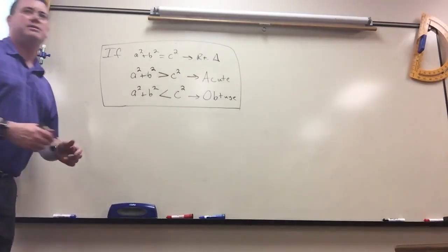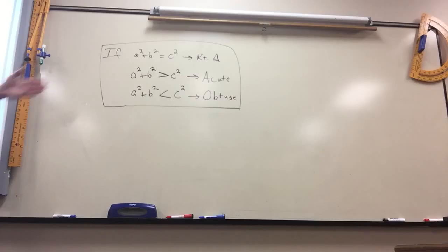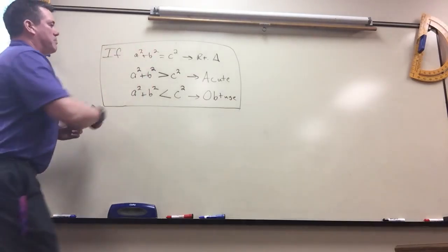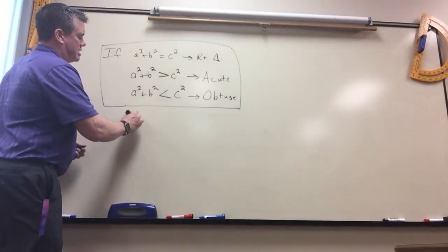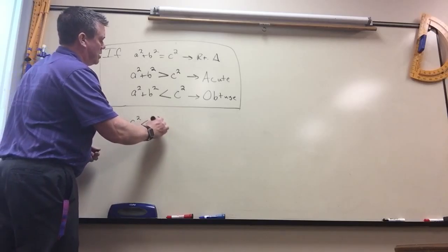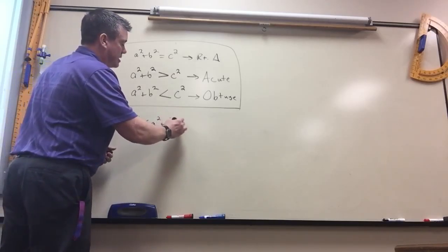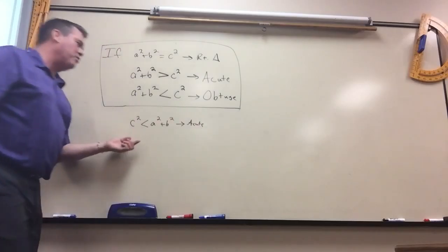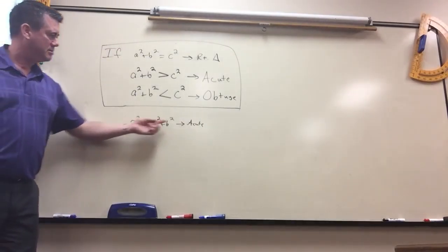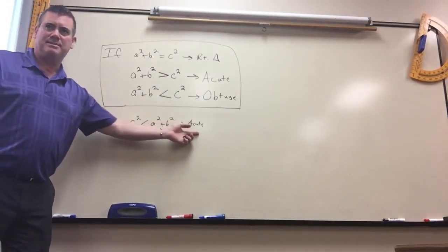Now in the book they write this backwards. They have these formulas in there but they put the c first. So they'll say c squared is less than a squared plus b squared, then it's acute. Which maybe that would be easier to remember because of less than an acute. Acute angles are less than 90.